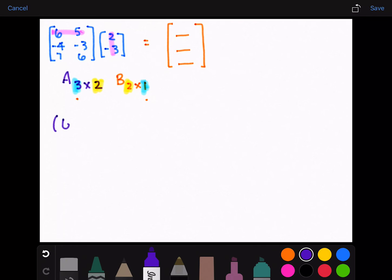So we will take six times two plus five times negative three, which will give us 12 plus negative 15. That gives us negative three. So negative three goes right there.